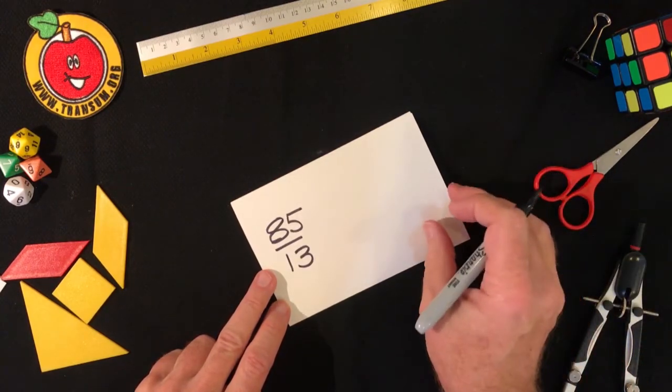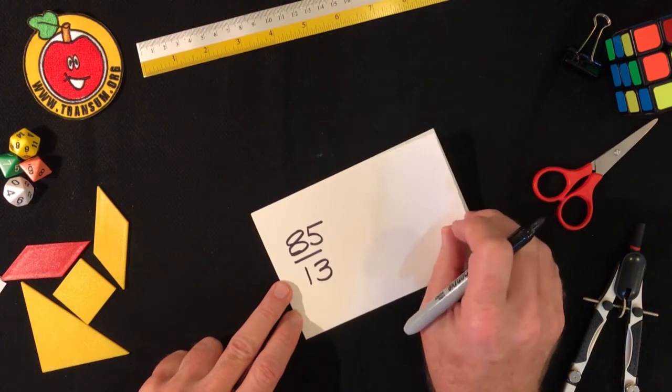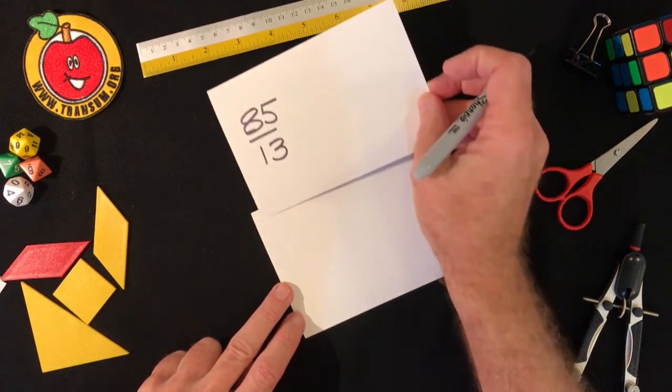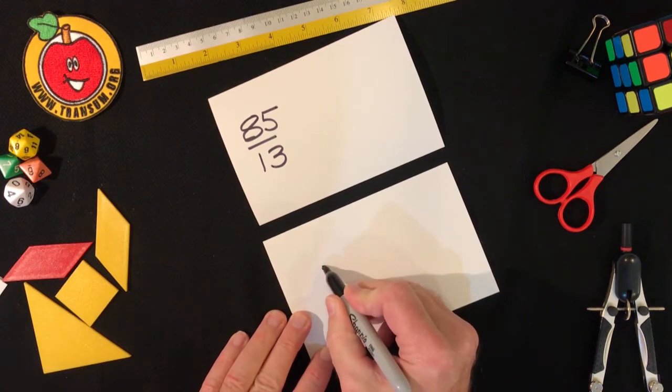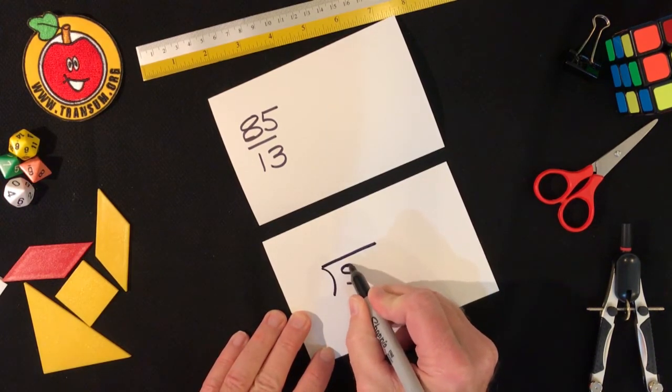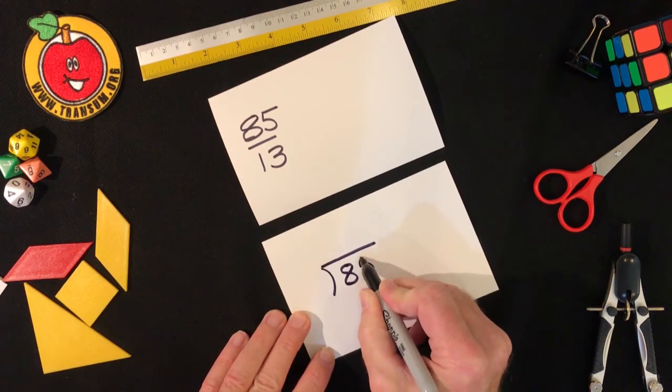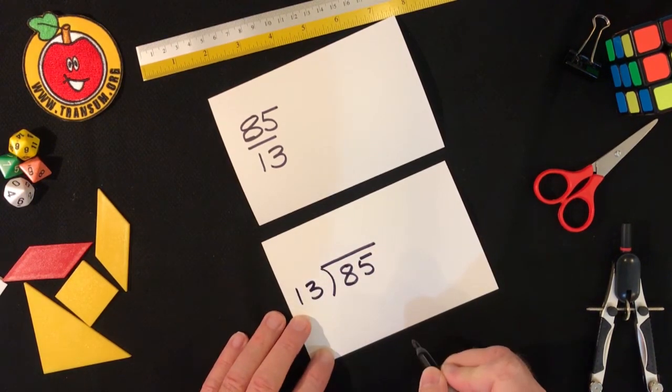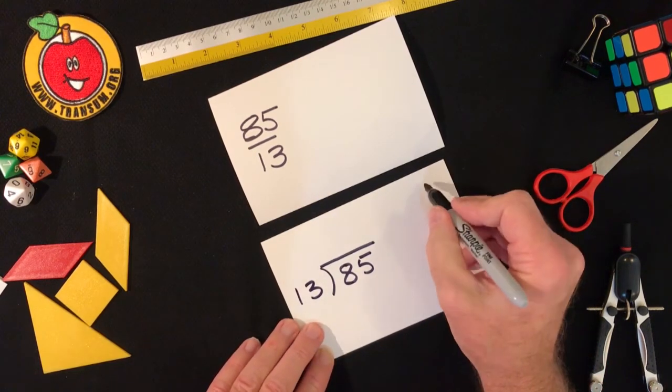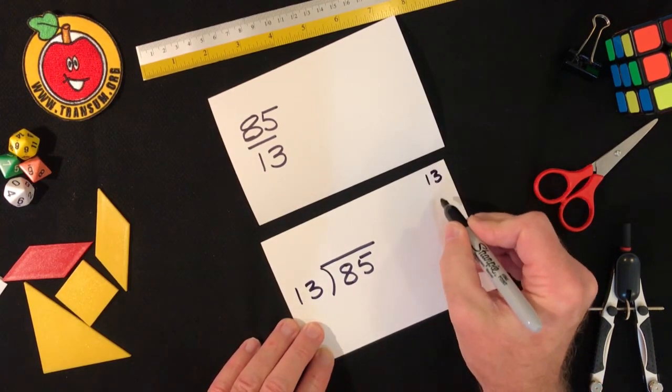Oh now this one's a bit more difficult. I don't really know my thirteen times table. I'll write this out as a long division. I'll put eighty-five inside the bus stop and I'll divide it by thirteen. Now I don't know my thirteen times table but I can quickly work it out.